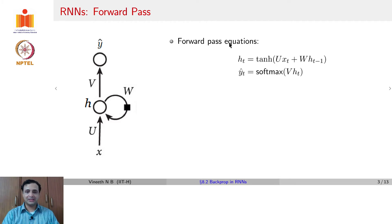Then your forward pass equations are given by h_t equals tanh of u x_t plus w h_{t-1}. And y_t hat is the softmax of v h_t. This would be your forward pass equations for an RNN that's solving a classification problem, where you have the output layer defined by a softmax.